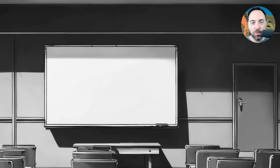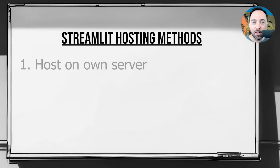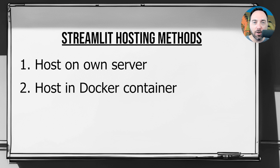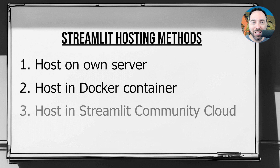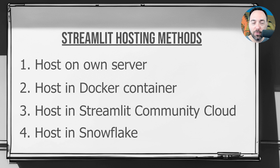There are a few different ways to host Streamlit applications. The first is to host it directly on your own server, whether that be on premises or in a cloud provider. The second is to host it in a Docker container with the same on-prem or cloud options available to you. The third option is cloud only, and that is to use the Streamlit Community Cloud. Finally, you can host Streamlit applications in Snowflake. Let's talk about each one of those four in turn.